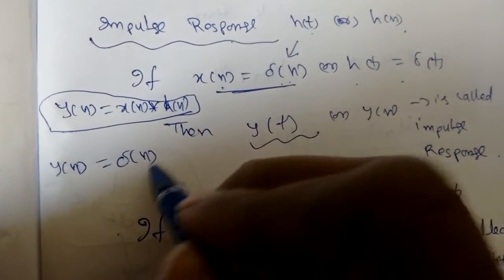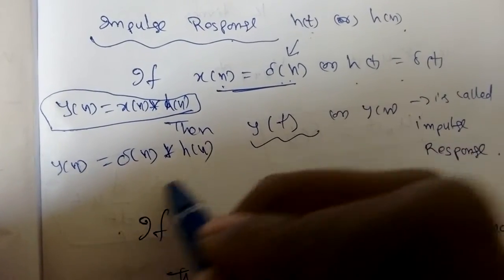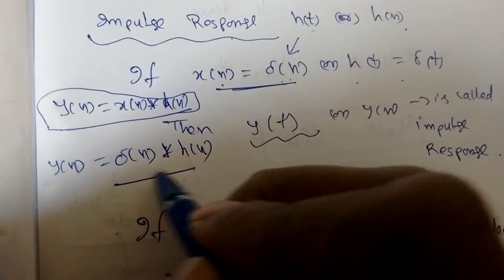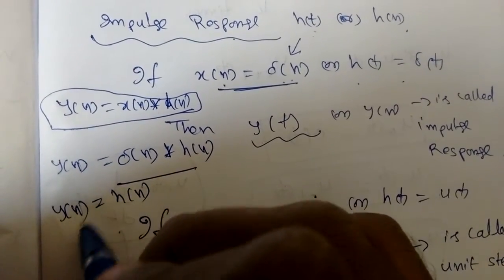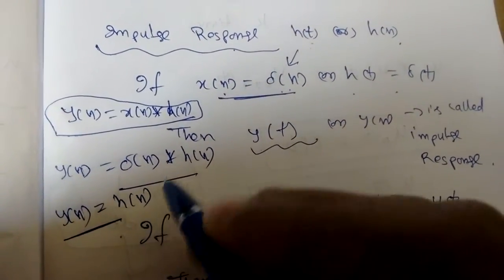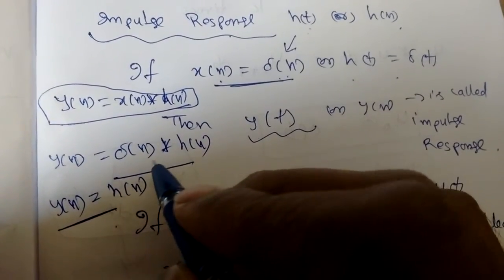From this expression, x(n) is delta(n) convolved with h(n). We know that when we convolve with delta(n), we will get h(n) itself. The output is h(n).